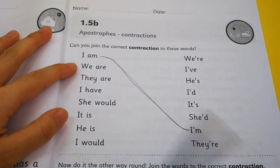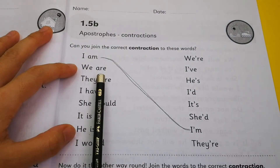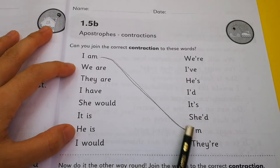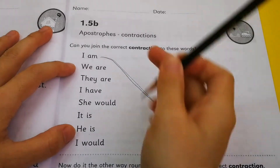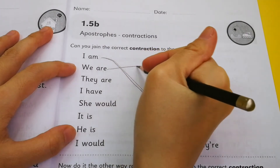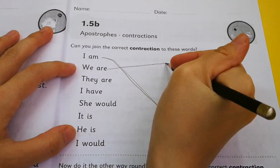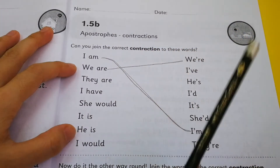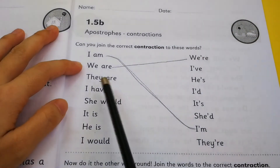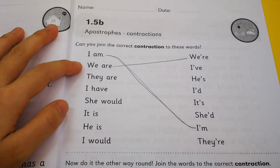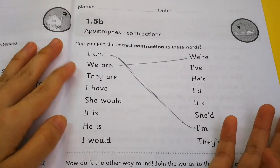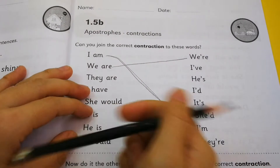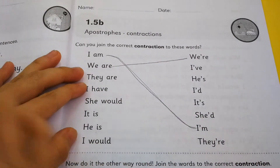Okay, 'we are' — the contraction for 'we are' is 'we're'. Draw a line to the correct contraction. Then try out the rest by yourself. If you are unsure, please re-watch the video to check the answers.